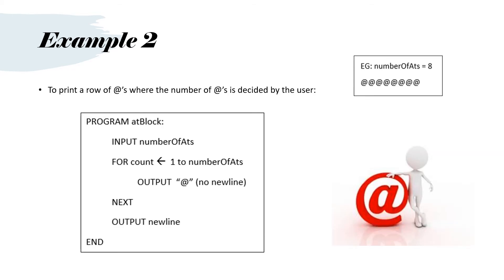Another example. If we wanted to print a row of AT signs where the number of ATs is decided by the user — for example, the user wants 8 AT symbols — this is what it would look like. Program at block. INPUT number of ats, so the user can say how many ats they want. Then FOR count goes from 1 to number of ats. We put OUTPUT the AT sign in quotes, with no new line — we don't want a new line because usually OUTPUT automatically puts a new line, but this time we're going to print the next AT next to this one. And we go NEXT. When the FOR loop has finished, we go OUTPUT new line and END.